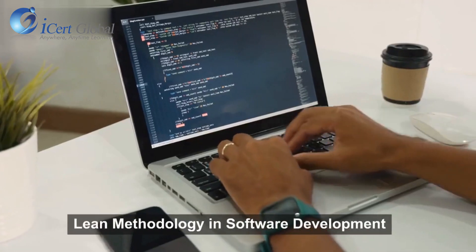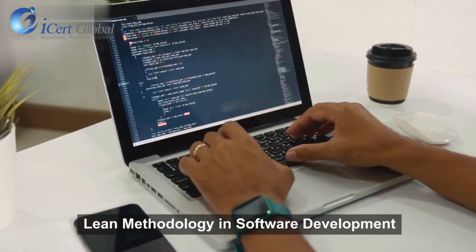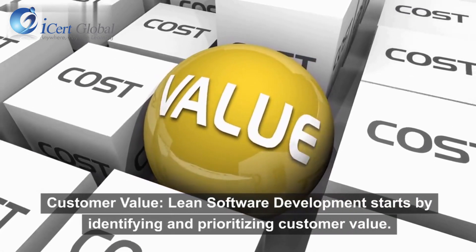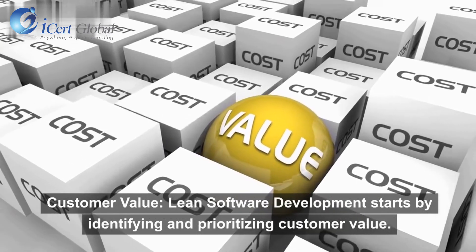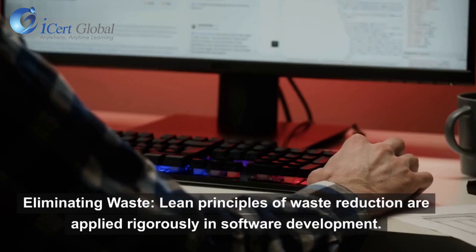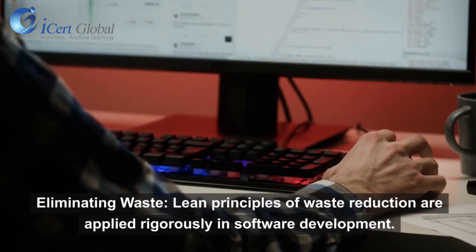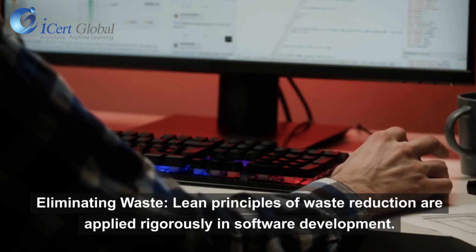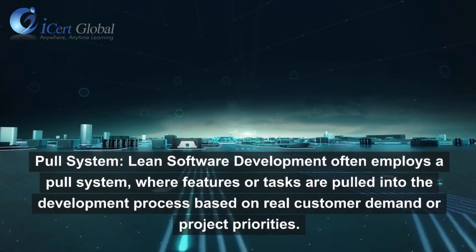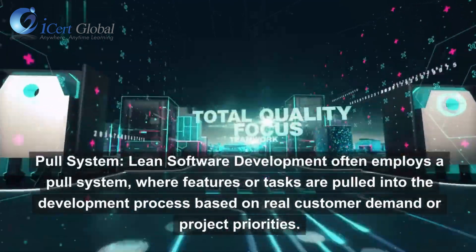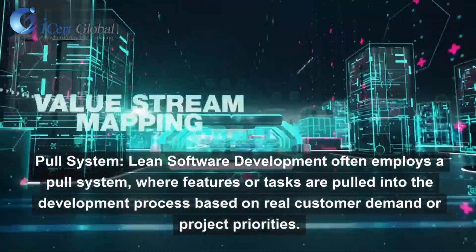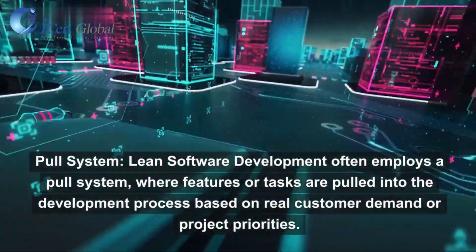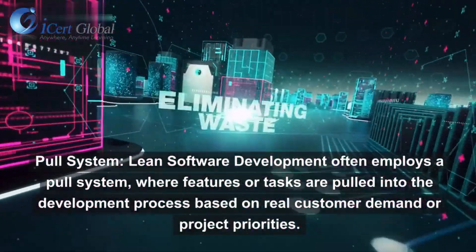Lean Methodology and Software Development. Customer Value: Lean software development starts by identifying and prioritizing customer value. Eliminating Waste: Lean principles of waste reduction are applied rigorously in software development. Pull System: Lean software development often employs a pull system, where features or tasks are pulled into the development process based on real customer demand or project priorities.